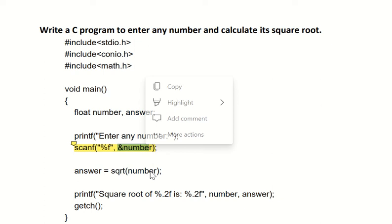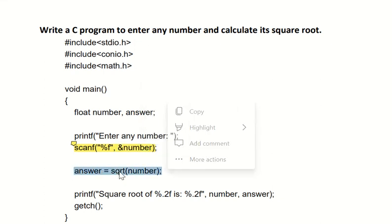The square root of 196 is 14, so the value of the answer variable is 14. In the next line, using the printf statement, we are printing the value of this variable answer, which is 14.